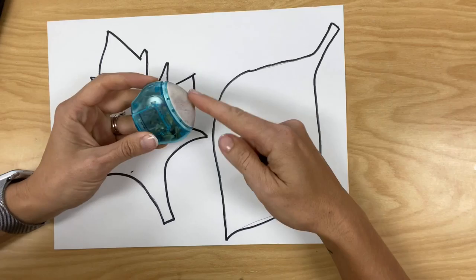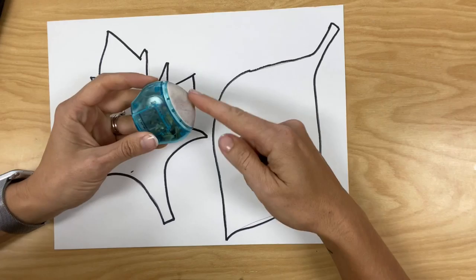After you've outlined your pencil lines, then you're going to take an eraser and clean up your edges.